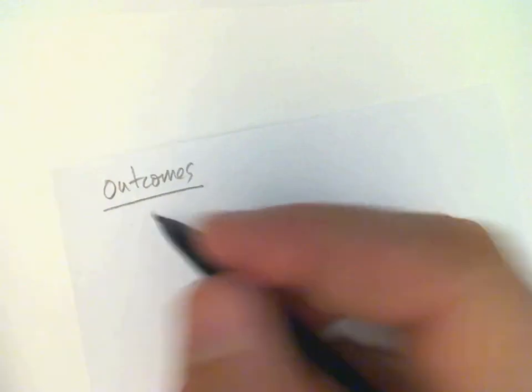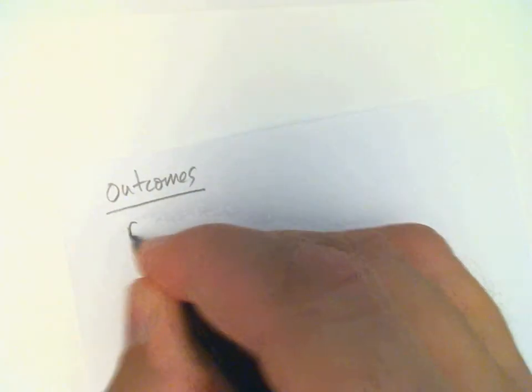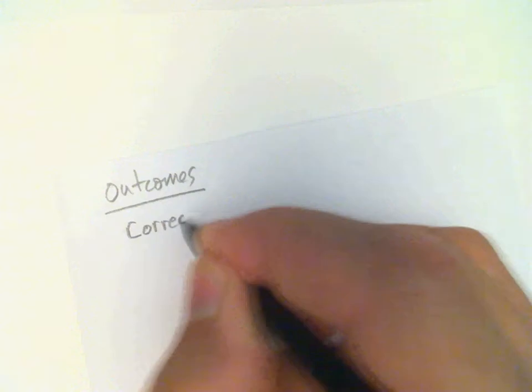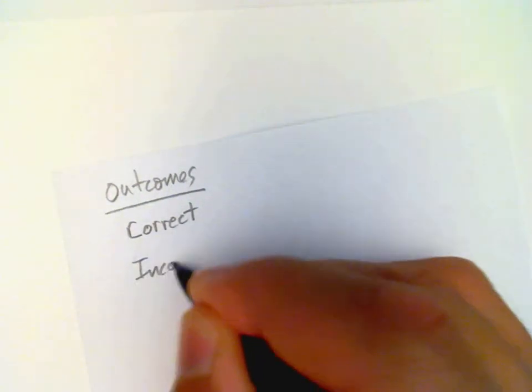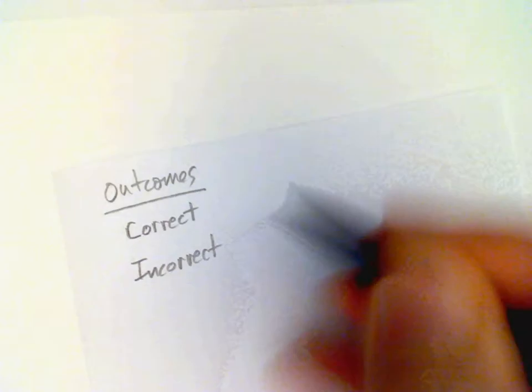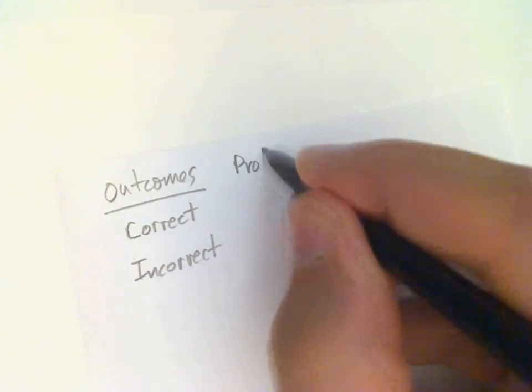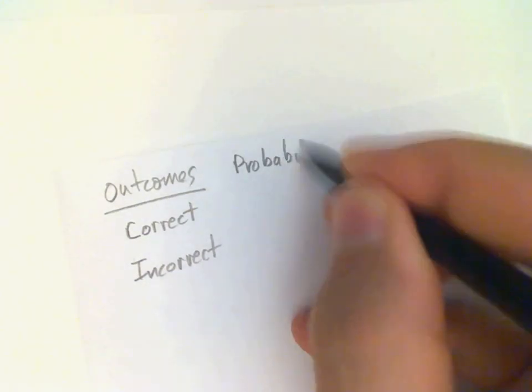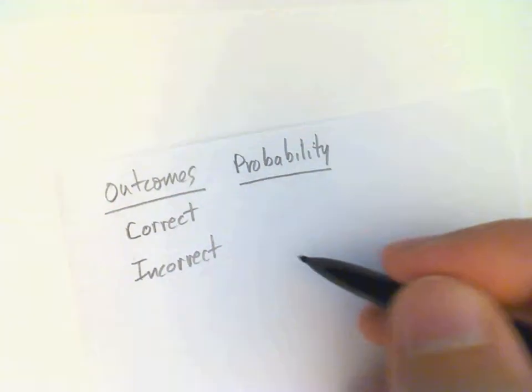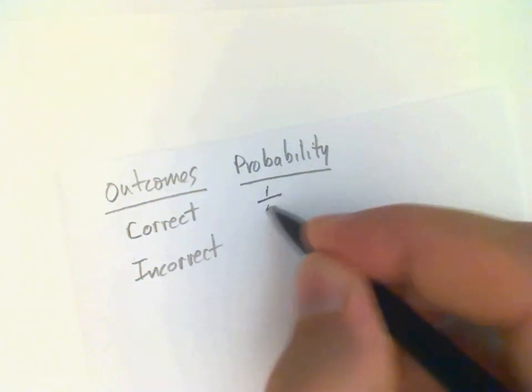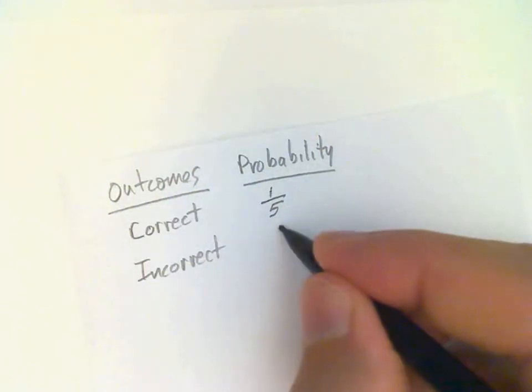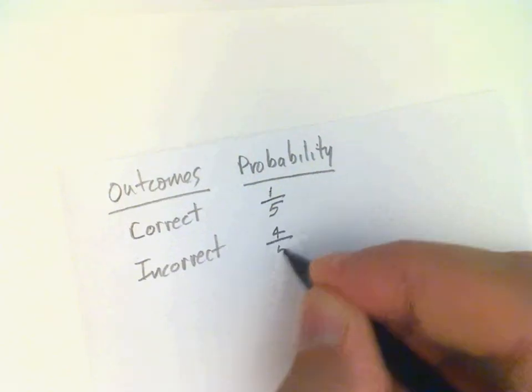There are two possible outcomes that we are interested in: our guess is correct or our guess is incorrect. The probability of a correct guess, since there are five choices, is one out of five. The probability for an incorrect guess is four out of five.